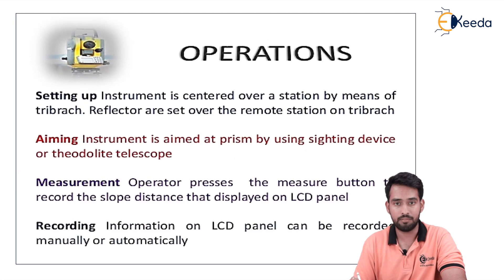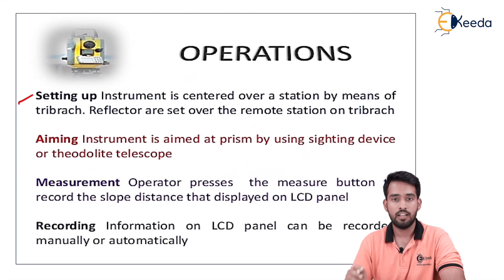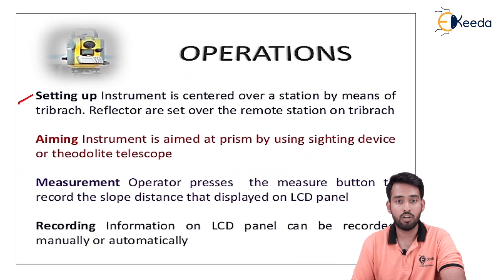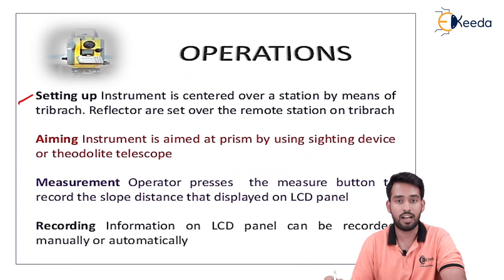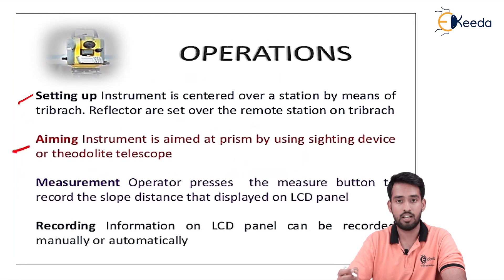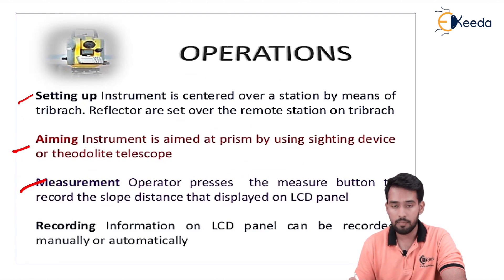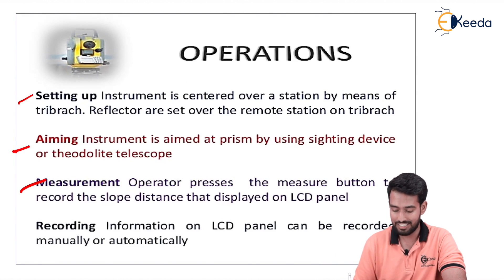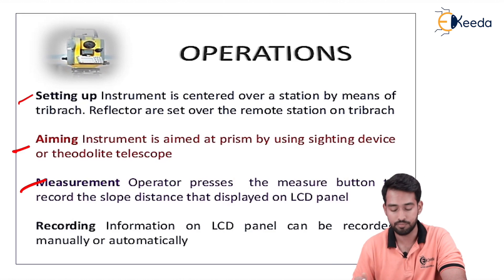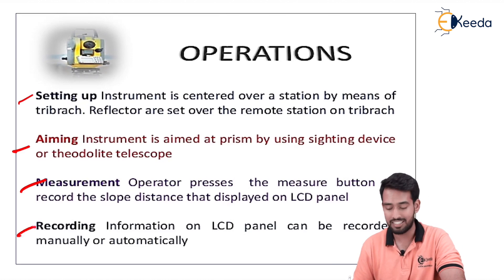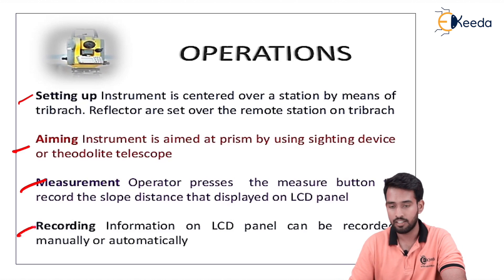For EDM operations, the first step is setting up the instrument at a given point by means of a tribrach or tripod. Then reflectors are set over the remote station on a tribrach at the point where we have to calculate the distance. Next is aiming — we bisect the prism set at the reflector using a sighting device, radio light, or telescope. Then, pressing the measurement button records the slope or horizontal distance, which is directly displayed on the LCD panel. The last step is recording — this information can be recorded manually or automatically depending upon your EDM.